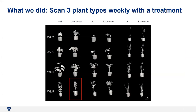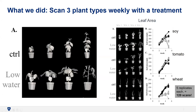The experimental outline involved scanning plants weekly at weeks two, three, four, and five for soybean, tomato, and wheat. Results showed that leaf area seemed to increase in both well-watered and low-water conditions until a catastrophic drop-off in soybean when water ran out. The tomato actually preferred the low-water condition, so it couldn't be called a universal low-water stress across all three plants. The wheat showed a strong phenotypic difference between conditions.